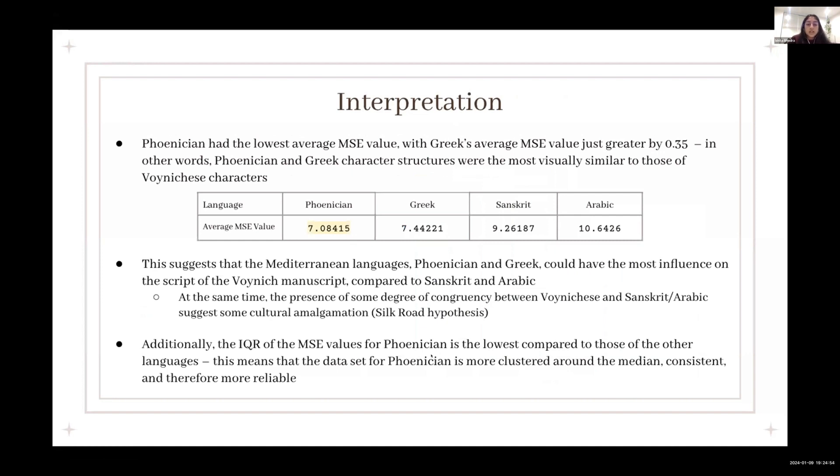So as I said, Phoenician had the lowest average mean square error value. In other words, Phoenician and Greek character structures were the most visually similar to those of Voynich's characters, which suggests that the Mediterranean languages could have had the most influence on the script of the Voynich's characters, as compared to Sanskrit and Arabic. But this also presents an interesting point, because at the same time, the presence of some degree of congruency between Voynich's and Sanskrit and Arabic characters suggests some cultural amalgamation, which leads to the Silk Road hypothesis that I'll talk about in my future work.